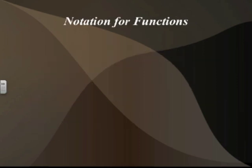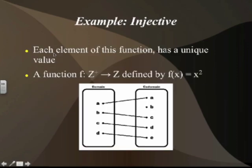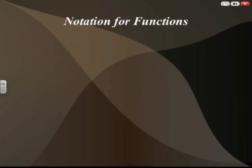We can look at the notation for functions. When we want to specify a function's codomain and its domain, we would say that a function goes from, say, the set of all integers to the set of all positive integers. For example: f from the set of all integers to the set of all positive integers is defined by f(x) equals x squared.